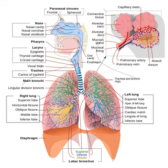The lungs expand and contract during the breathing cycle, drawing air in and out of the lungs. The volume of air moved in or out of the lungs under normal resting circumstances, the resting tidal volume of about 500 milliliters, and volumes moved during maximally forced inhalation and maximally forced exhalation are measured in humans by spirometry. Not all the air in the lungs can be expelled during maximally forced exhalation. This is the residual volume of about 1.0 to 1.5 liters which cannot be measured by spirometry.